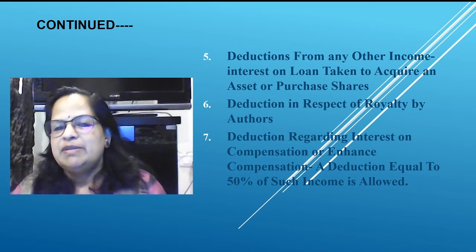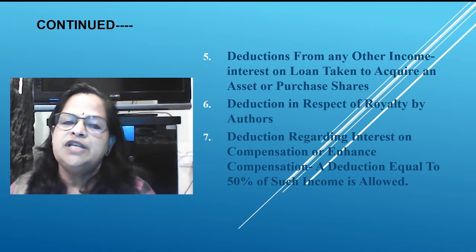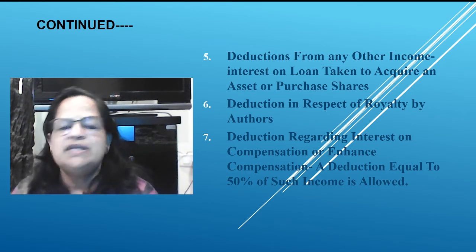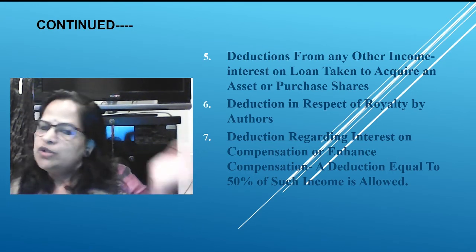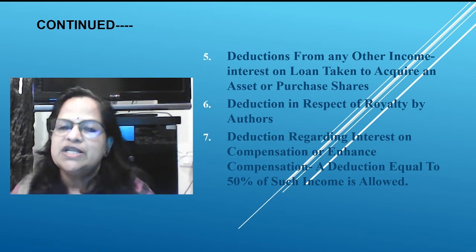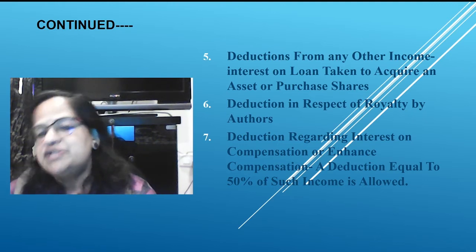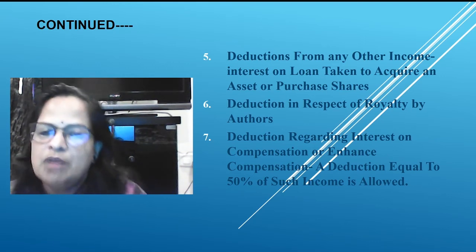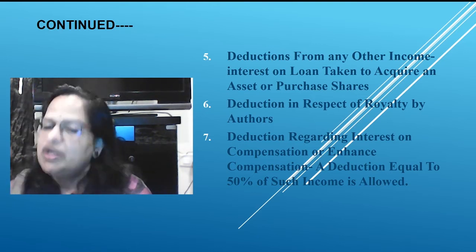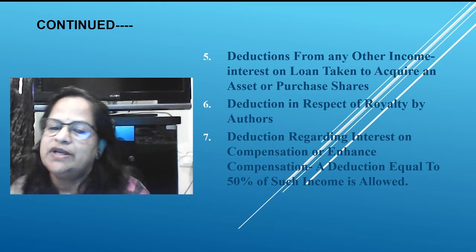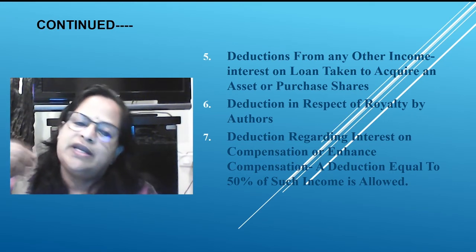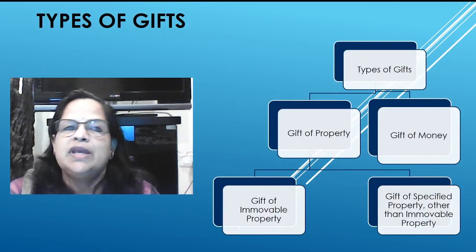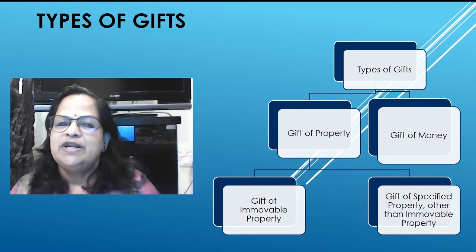Deduction regarding interest on compensation or enhanced compensation: a deduction equal to 50 percent of such income is allowed. For example, in a motor accident case, the court decides compensation. Sometimes there is delayed payment with interest, or the person goes to a higher court and gets increased compensation. In those cases, 50 percent of the interest on such compensation is deductible.